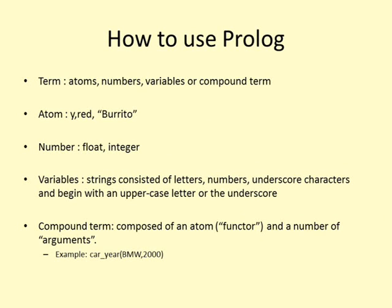A term is Prolog's single data type. A term can either be an atom, a number, a variable, or a compound term. An atom is a general purpose name with no inherent meaning. Some examples of atoms are y, red, and burrito.